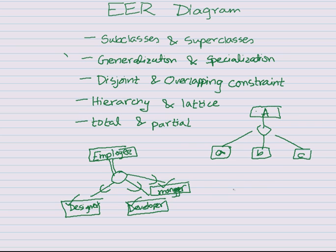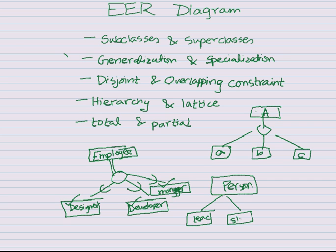In a similar way, specialization is when you have one common class — like a person. Suppose a person in a university. A person in a university could be a teacher, a student, a guardian, a caretaker, or a janitor. A university or school would contain these categories of people — teacher, student, guardian, and janitor — and these are like the specialized form.